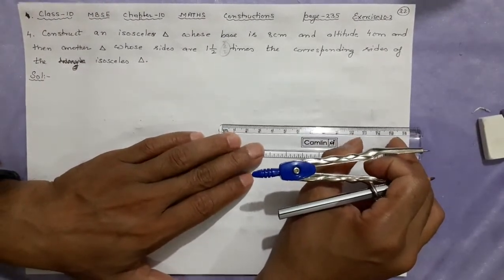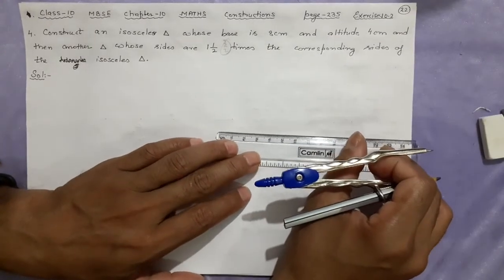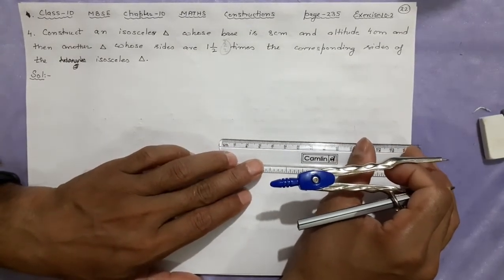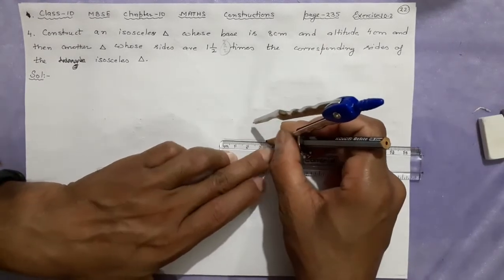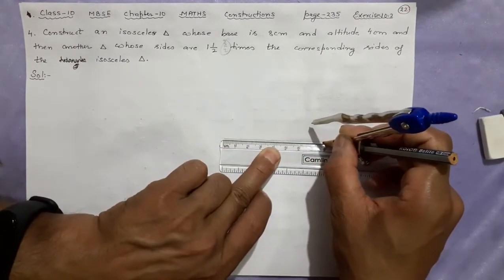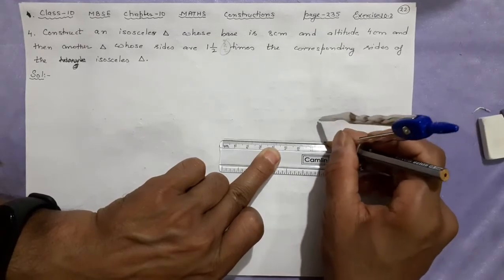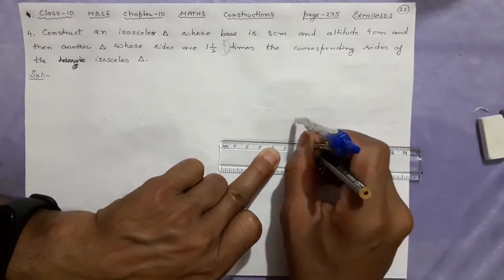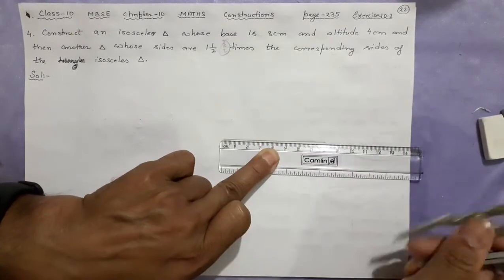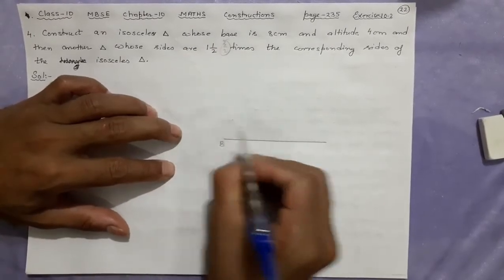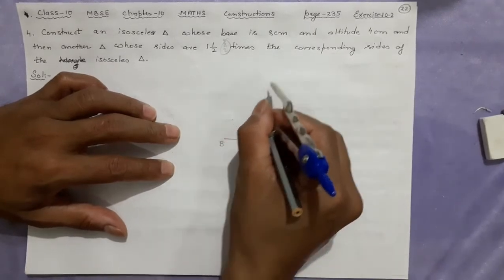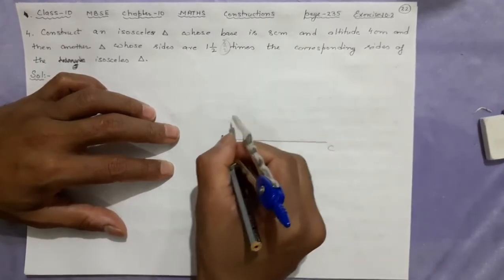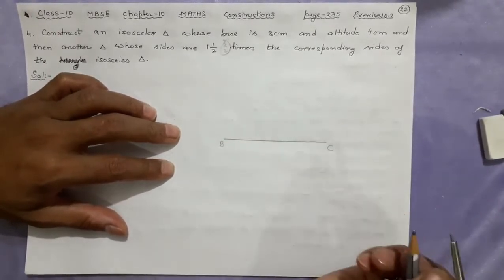So let us start. We make the triangle first. The base is 8 centimeters, so I'll make that side 8 centimeters first. Till here, 8 centimeters is there. Done. This will be called BC. Now you know that there will be A which is equidistant from these two - AB and AC will be the same.